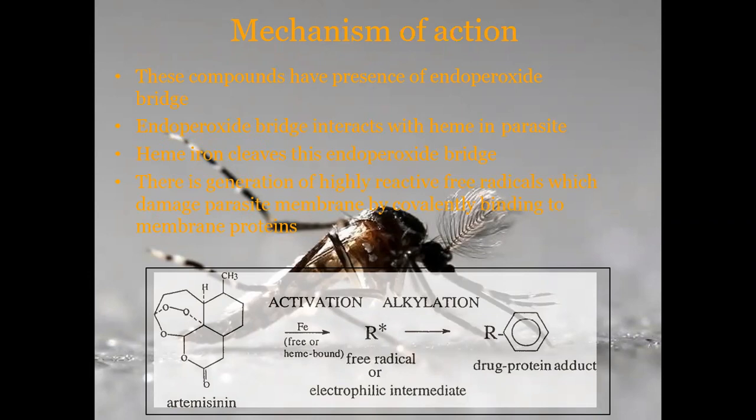These compounds have the presence of an endoperoxide bridge. This endoperoxide bridge interacts with heme in the parasite. Heme iron cleaves this endoperoxide bridge, resulting in generation of highly reactive free radicals, which damage the parasite membrane by covalently binding to membrane proteins.